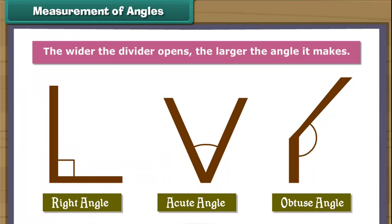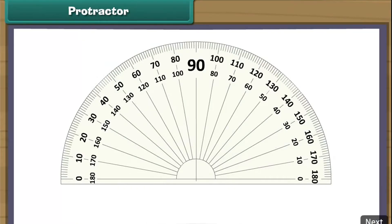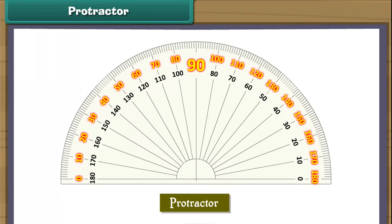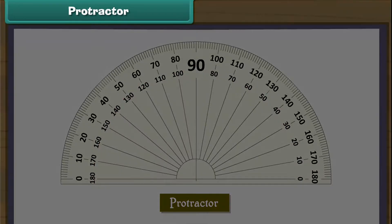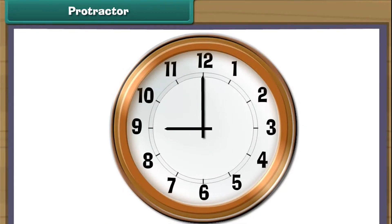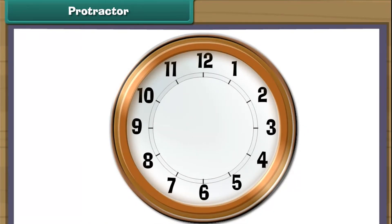The wider the divider opens, the larger the angle it makes. A protractor is a semi-circular geometric instrument. It has degrees marked on it from 0 to 180. Let us measure the angles made by the hands of a clock with the help of a protractor.